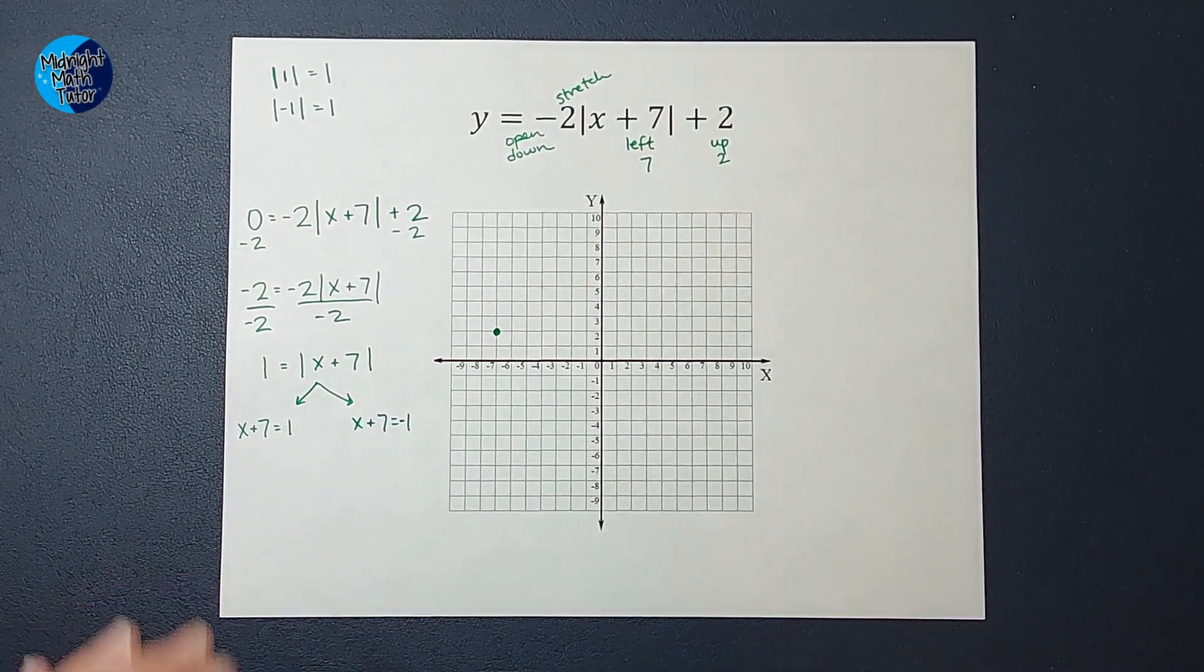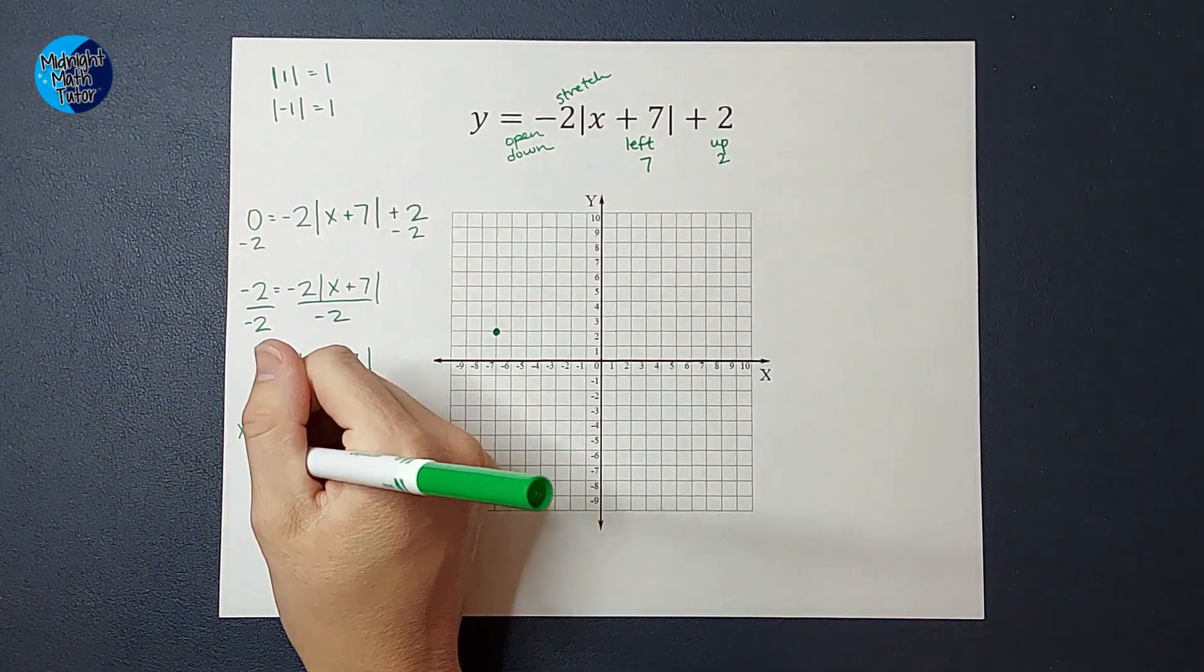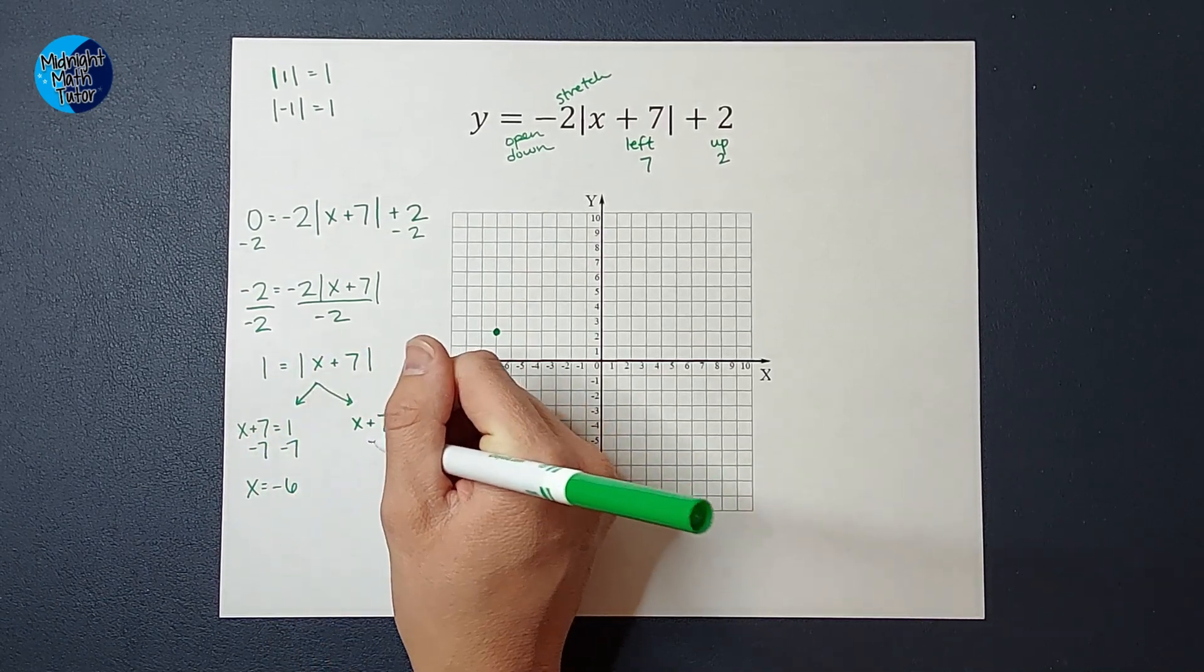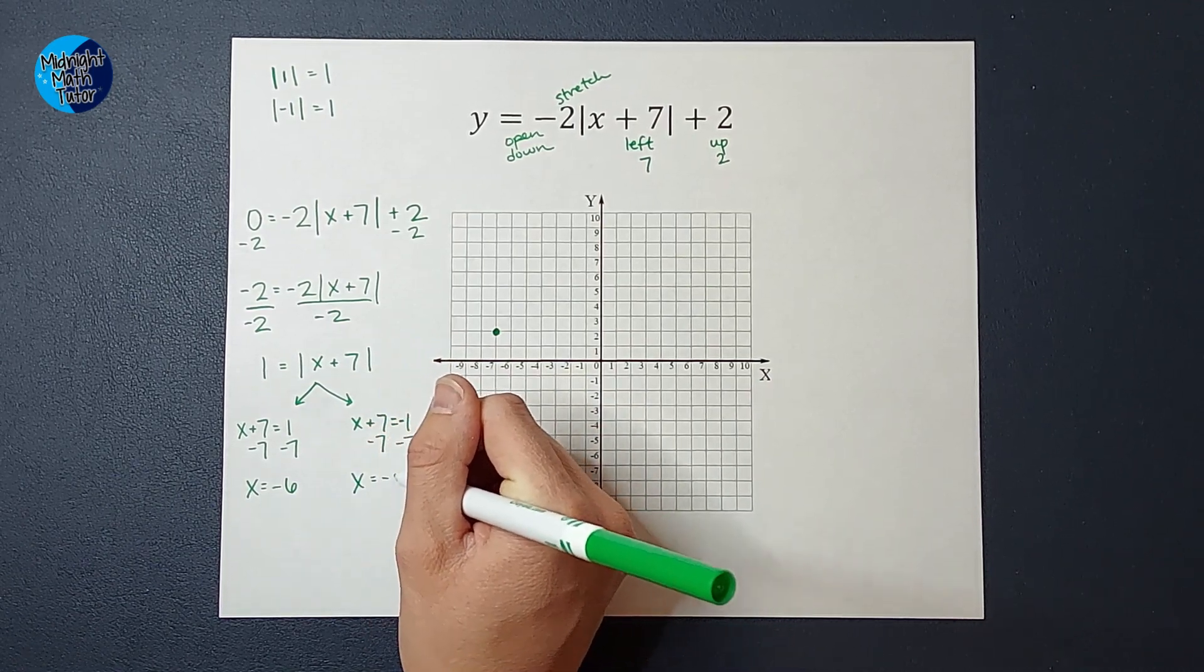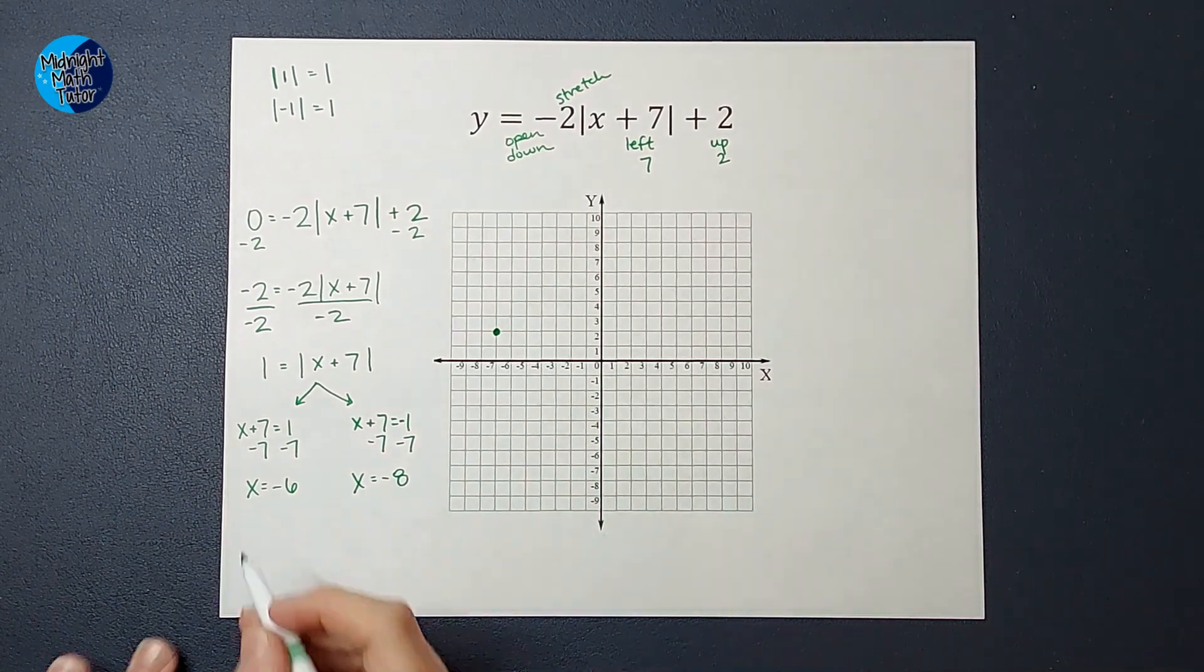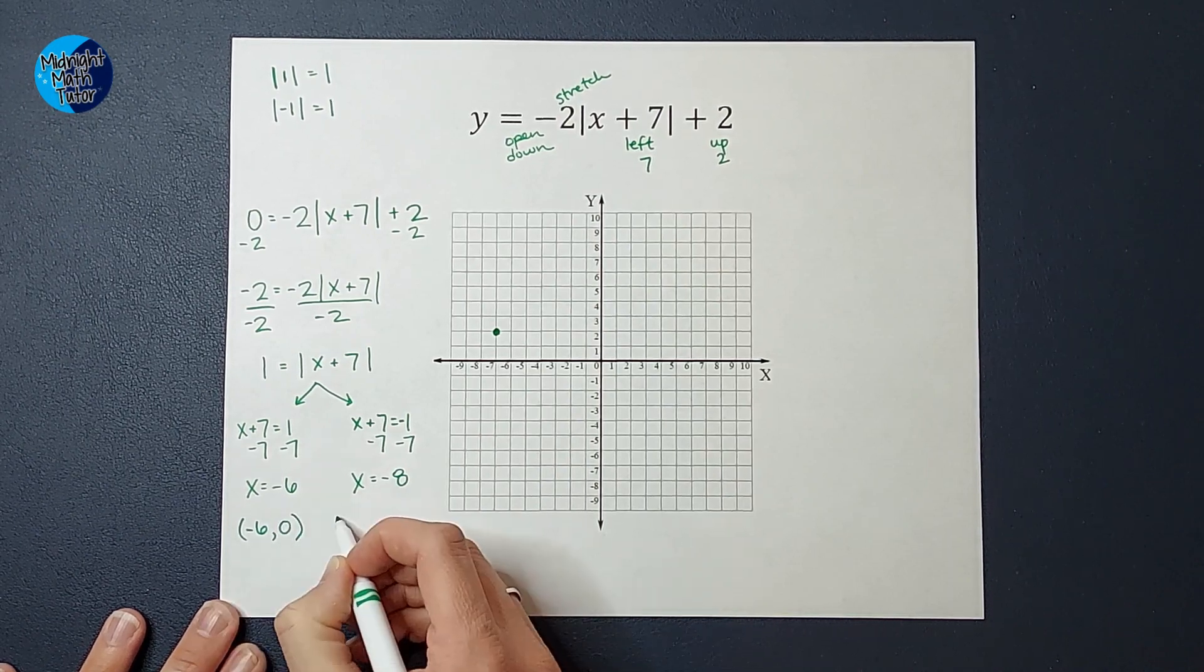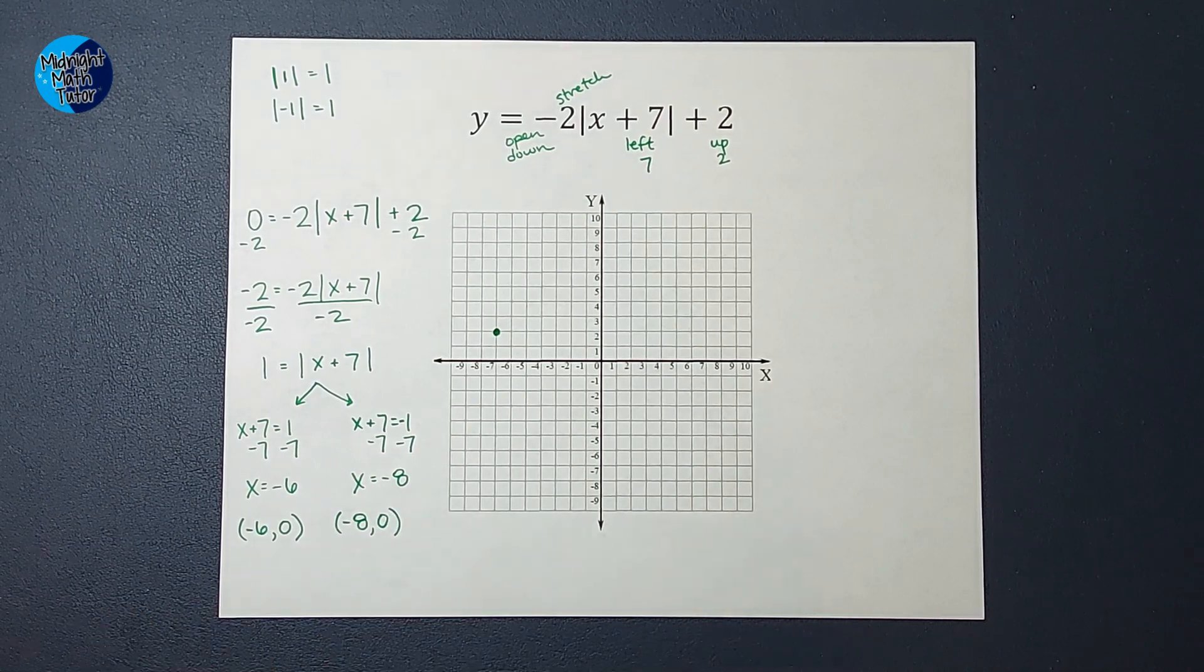Pretend I did that right. There we go. Now it's right. It could be equal to -1. So now we're going to solve for x on both of these. So I get x equals -6, and I get x equals -8. So when I plugged in 0 for y, I got -6 for x, and I also got -8 for x.